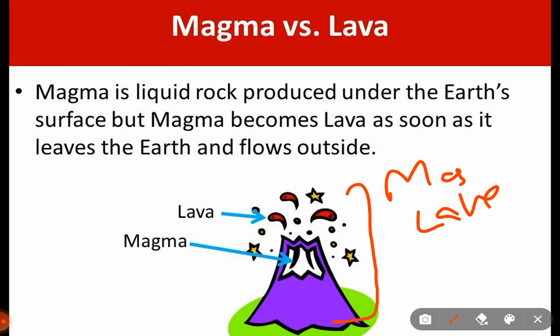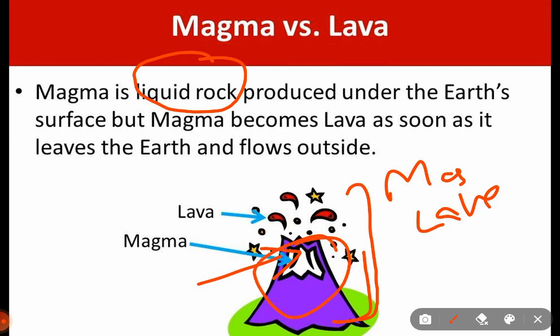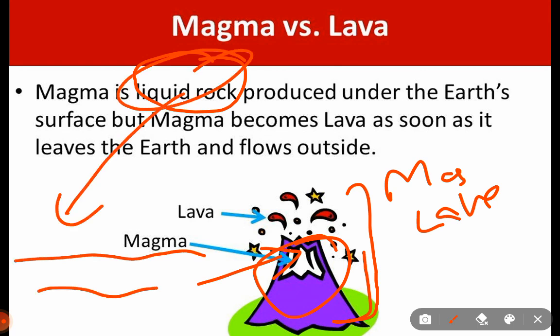Here you can see a mountain. Magma and lava are both actually liquid rocks — rocks in liquid form. Magma is basically under the earth's surface, in this case inside the rock, inside this mountain.